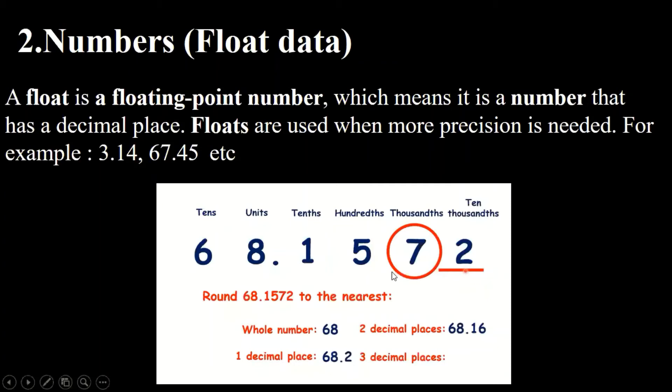I just want to show you that this one is a decimal data example. It has certain parts. If we write two decimal places, so 68.16, this is actually float data.